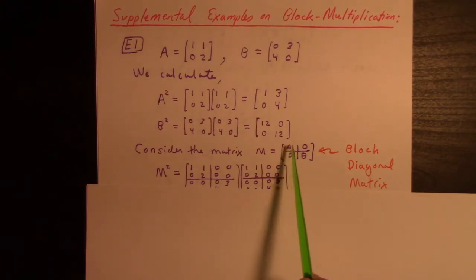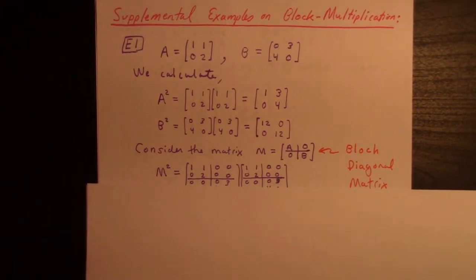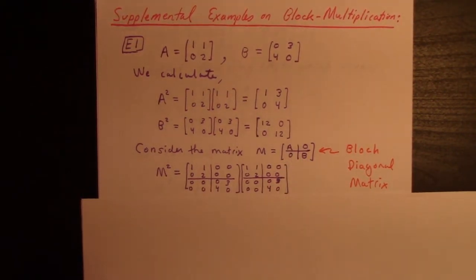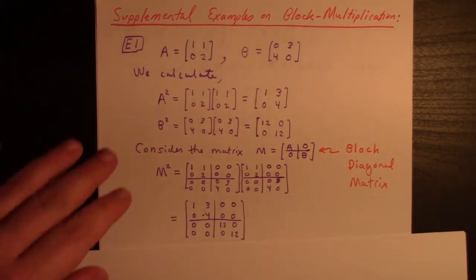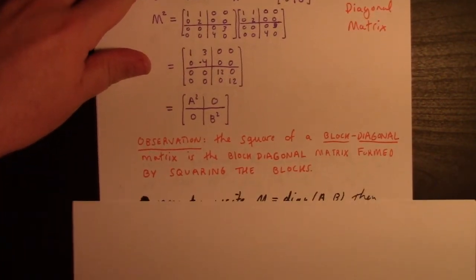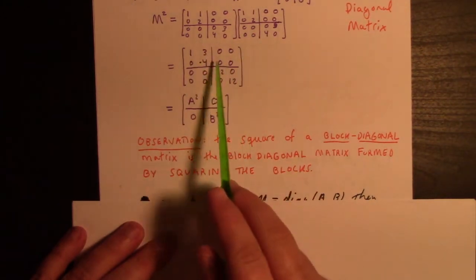If we calculate M squared, we get this. After you square it, you see what you get is the matrix shown here.